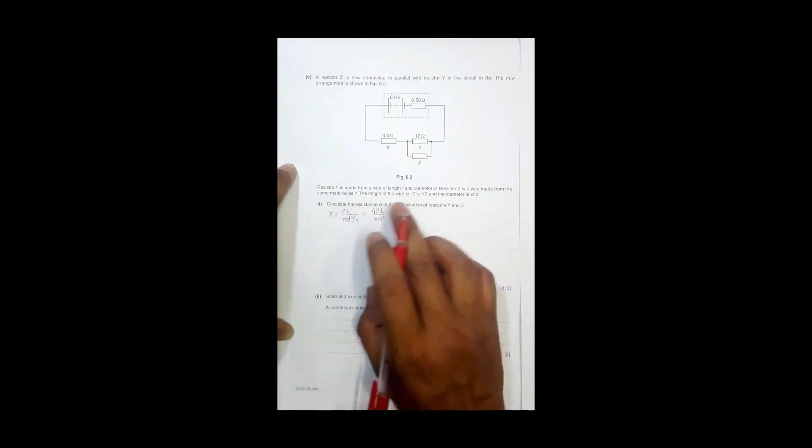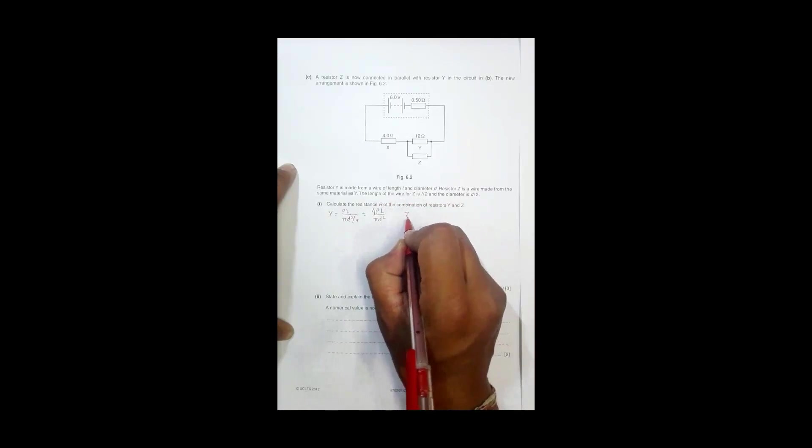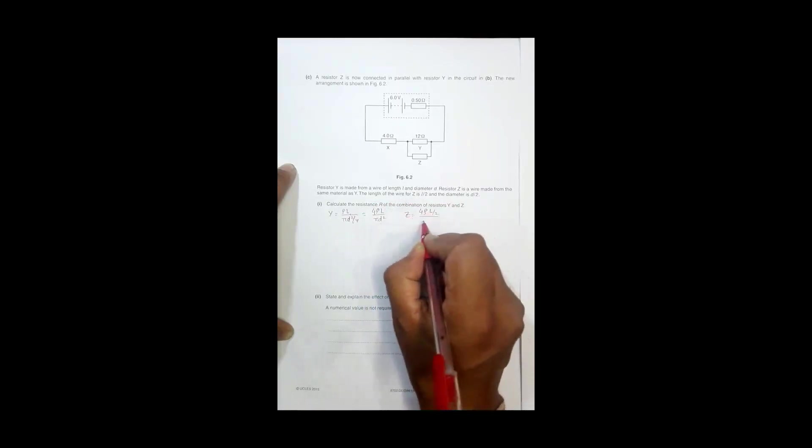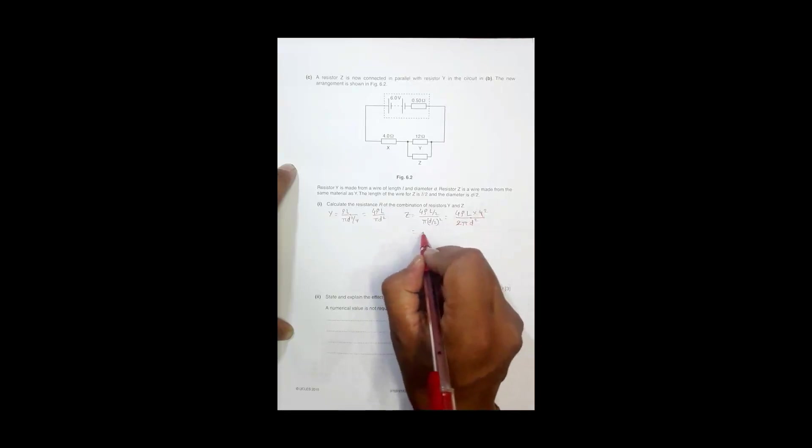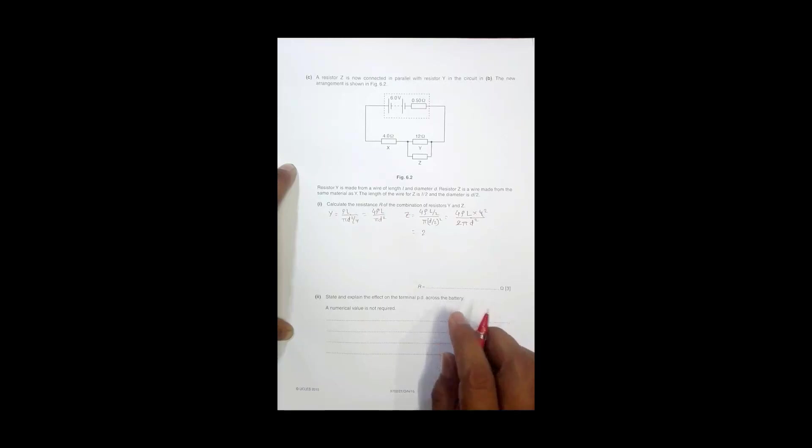Whereas Z is made of the same metal, the length of wire for Z is l by 2 and diameter is d by 2. So that means Z is equal to 4 rho times l by 2 divided by pi times d by 2 whole square, equal to 4 rho l. This 2 comes here so it is 2 pi d square, and this 4 goes up so it should be 2, 2, 2, 4 equal to 2, 4 rho l by pi d square.